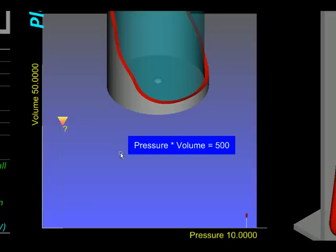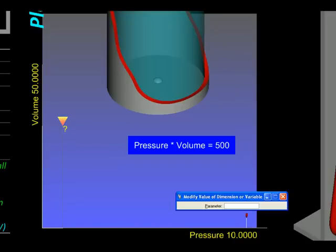Right now the volume is 50 units and the pressure is 10 units. Next we will change the pressure, say double it to 20. As we do so, watch the volume. Did you notice that it halved?